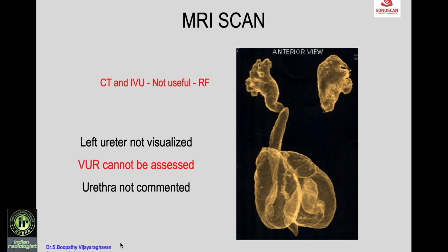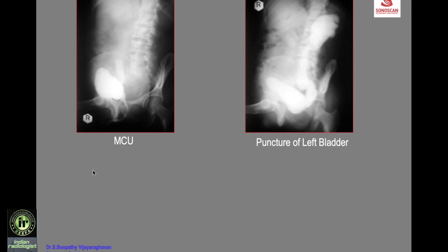MRI scan was requested to confirm the ultrasound diagnosis, but the left ureter was not visualized, VUR could not be assessed, and CT and IVU were not useful due to renal failure. MCU showed a normal urethra and normal bladder with vesicoureteric reflux on the right side. Since the left bladder was obstructed, puncture of the left bladder was performed, confirming no urethra and vesicoureteric reflux with atrophic left kidney.